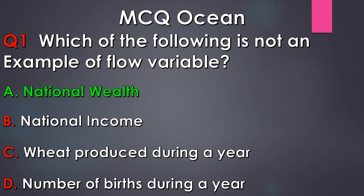The correct answer is Option A, National Wealth. Flow variable refers to all variables which are measured over a period of time. So National Income, wheat produced during the year, and number of births during the year are all flow variables. But National Wealth is a stock variable, which is measured at a particular point of time.